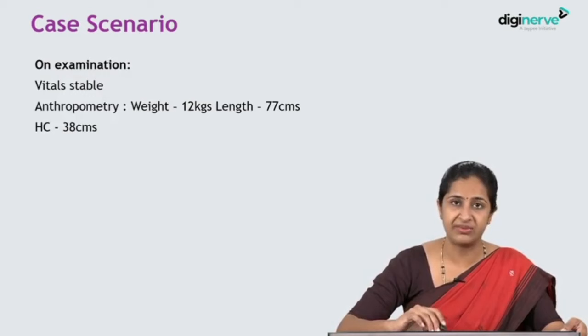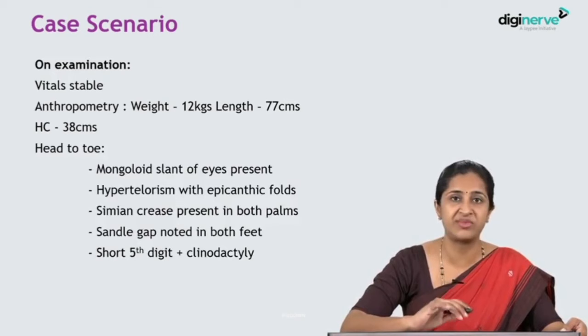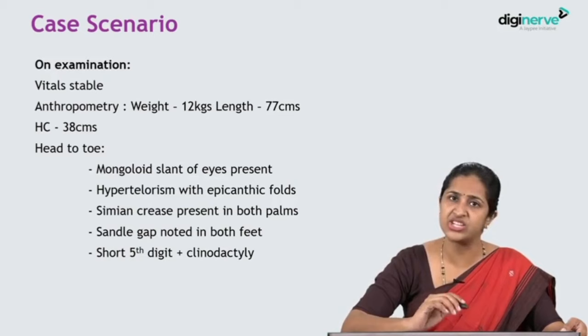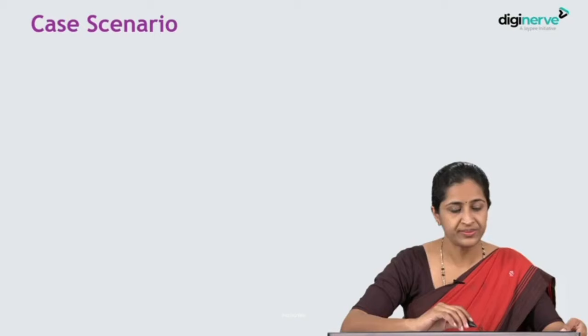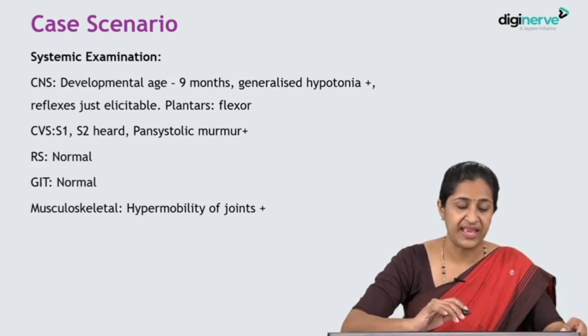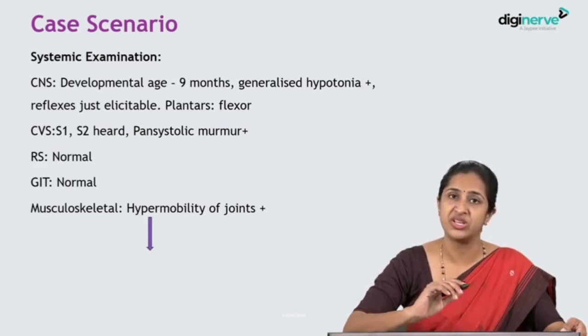On examination, vitals were stable. Anthropometry showed a weight of 12 kg and a length of 77 cm. Head circumference was 38 cm. On examination, the following findings were evident: there was a mongoloid slant of the eyes, hypertelorism with epicanthic folds, simian crease in both palms, sandal gap in both feet, and the child had a short fifth digit with clinodactyly. Systemic examination showed a developmental age of 9 months, generalized hypotonia with reflexes just elicitable and flexor plantars bilaterally. In the cardiovascular system, S1, S2 was heard, with a pansystolic murmur. Musculoskeletal system showed hypermobility of the joints.